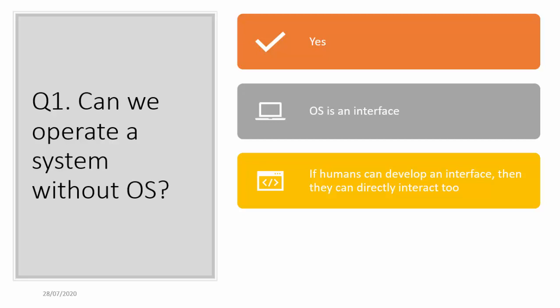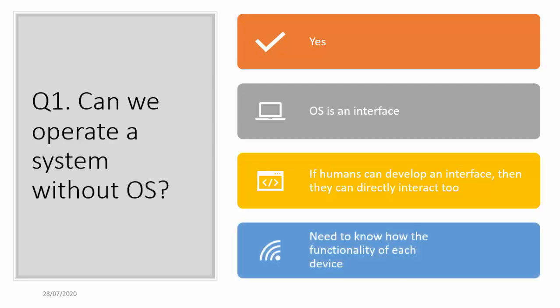So the question comes: if we can directly interact with hardware, why do we need the OS? This is because to interact with the hardware you need to know the working or the language of the device, which is not possible for most people since everyone is not from a CSE background. So highly skilled people develop the OS so that even a child or a person with no computer background can use a computer or mobile with minimum effort. We can operate the system without an OS, but you would need to know how every device works.